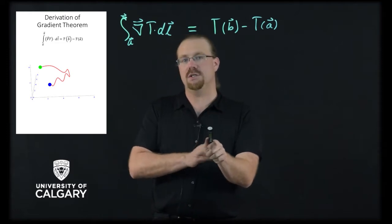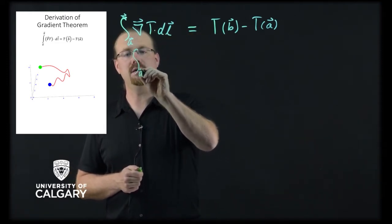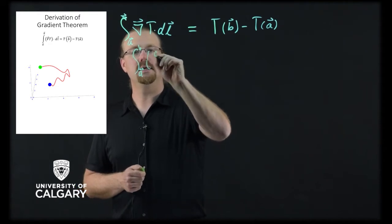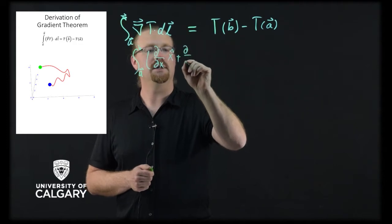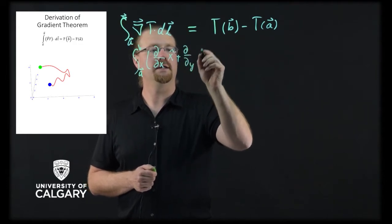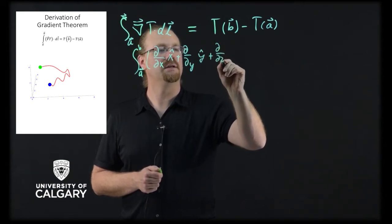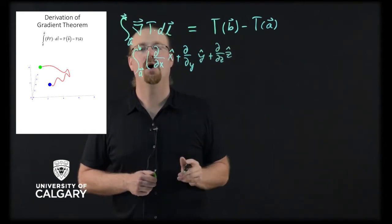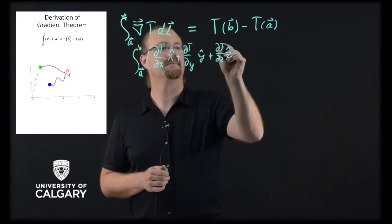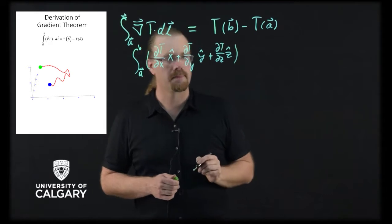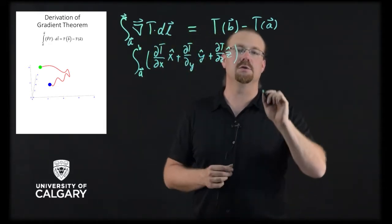If we were to do this in Cartesian coordinates, what we could say is we have this integral from a to b of d by dx x hat, plus d by dy y hat, plus d by dz z hat, all acting on T. Then we're going to dot this with our dl in Cartesian coordinates.